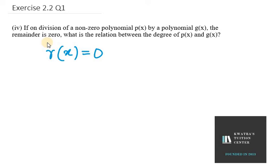We need to know the relation between the degree of P(x) and G(x). P(x) is the dividend and G(x) is the divisor. So, the degree of P(x) must be greater than or equal to the degree of G(x).